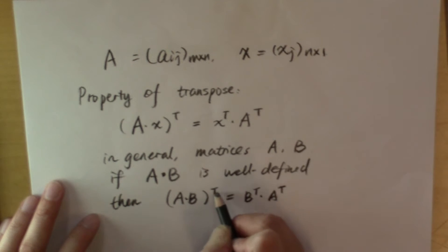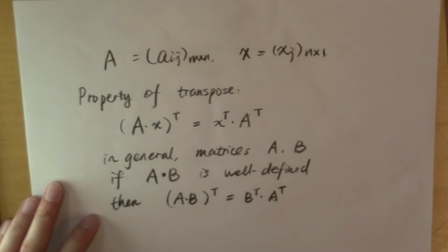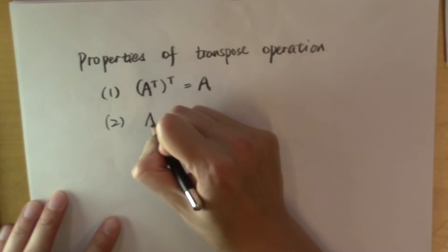Basically, you strip off this transpose by putting the transpose first, the second, and then the first matrix, and multiply them together. So you take this off, put it onto each other, put it on each matrix, and flip the order of the multiplication. So here's the second property of the transpose operation.